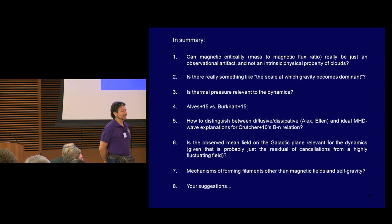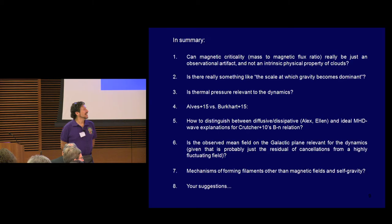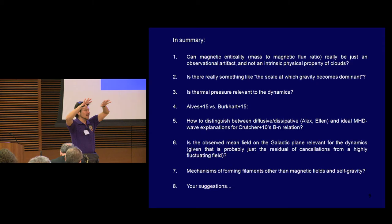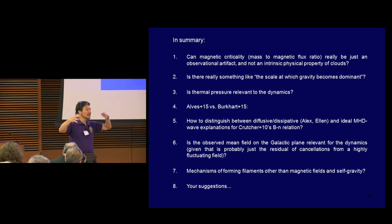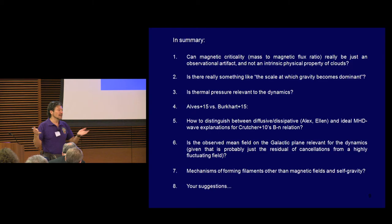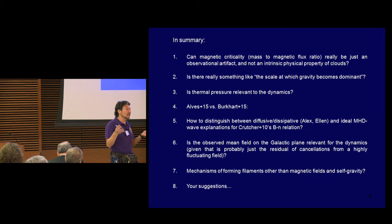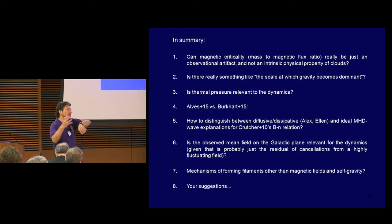Alex Hills asked why there is a three-phase interstellar medium, and the answer is because Cox and Smith said so. The question about thermal pressure referred more to the phase diagrams of pressure versus density and the multi-phase ISM. Like Alex was showing, no matter what you do, the medium always manages to arrange itself in that pressure range. Could it be that it's just because of the cooling and heating rates — that the thermal pressure is just doing what it has to do, but not really playing a significant role in confining clouds and the warm-to-cold transition?